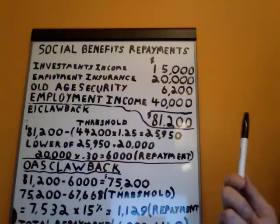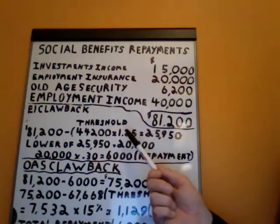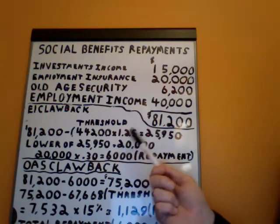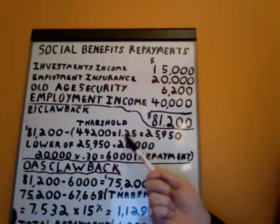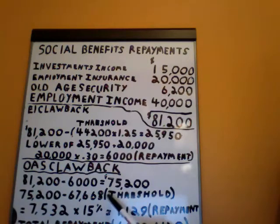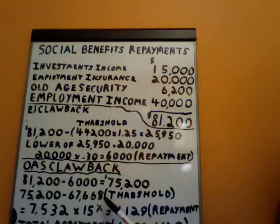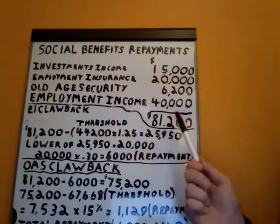Now that amount is definitely in excess of the employment insurance threshold, which is equal to $44,200 times 1.25, which works out to $55,250. It's also in excess of the old age security clawback threshold, which for 2011 is $67,668. So to do this calculation, we do the employment insurance clawback first.